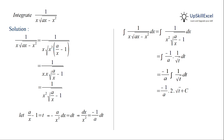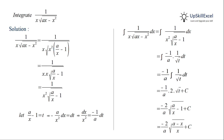Substituting t back as a over x minus 1, the result is minus 2 over a times the square root of (a over x minus 1) plus c. This can also be rewritten as minus 2 over a times the square root of (a minus x) over x, plus c.